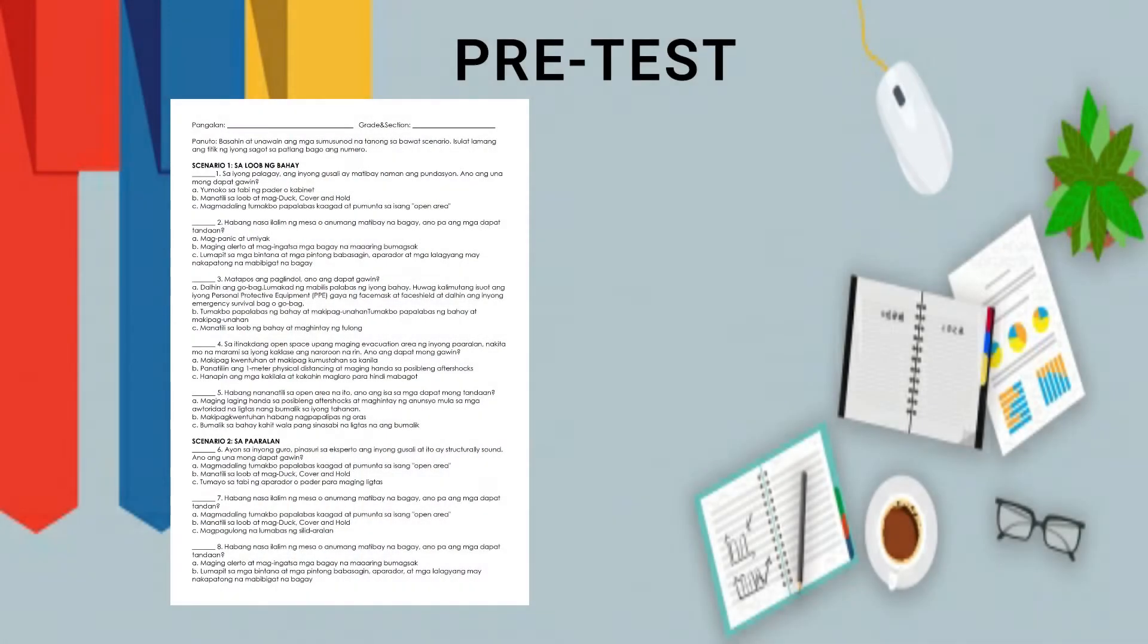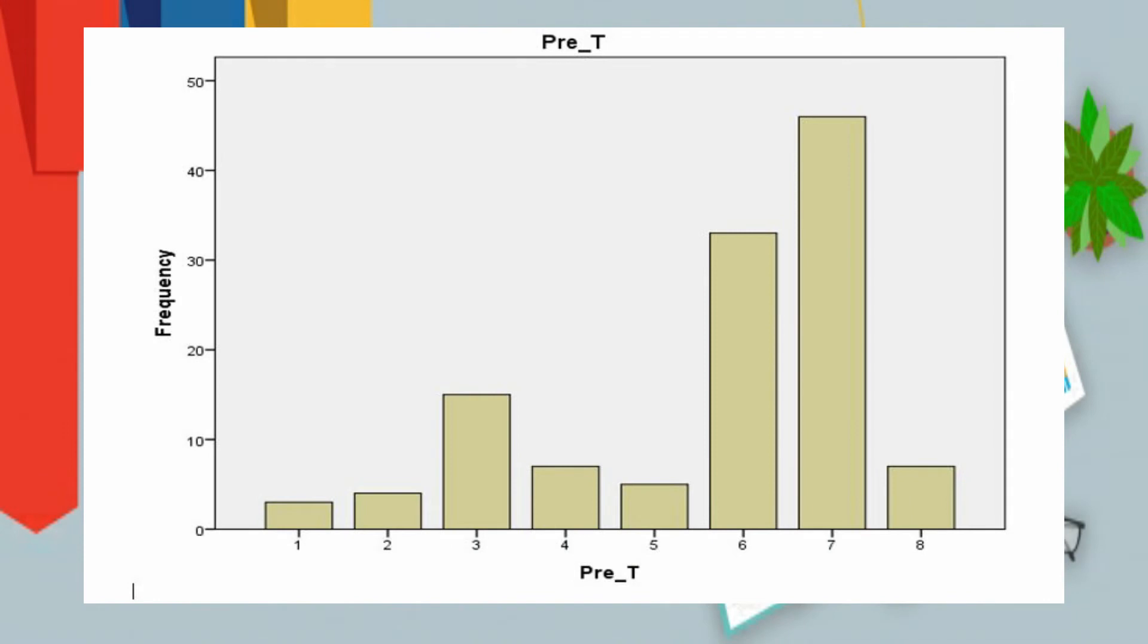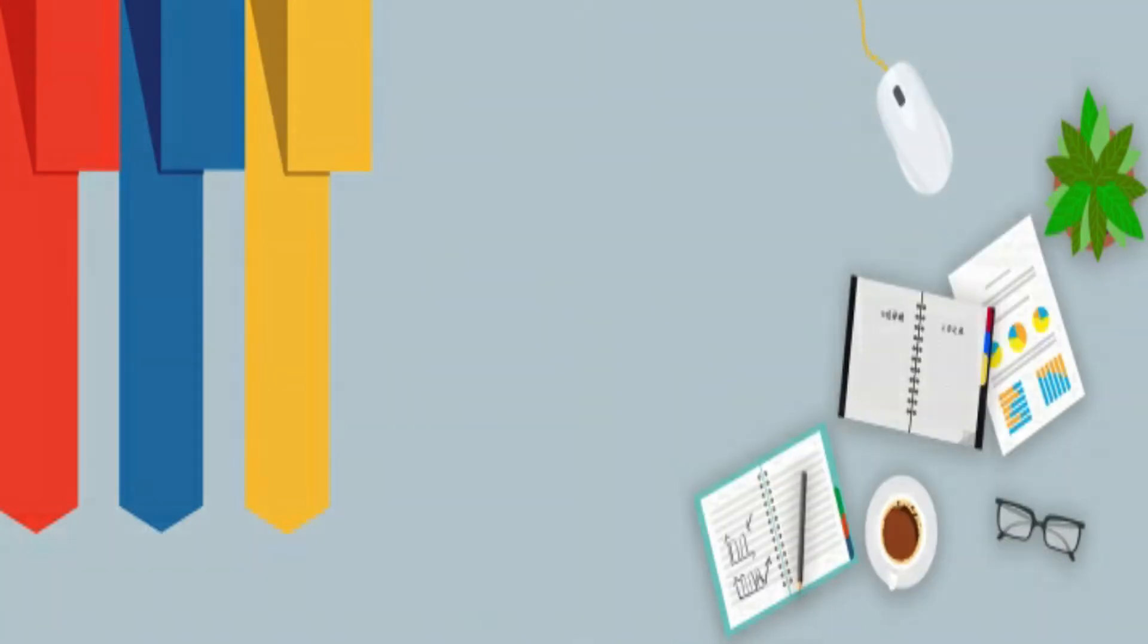A pretest was administered to Key Stage 2 learners of Ibea Elementary School to determine the learners who needed intervention on their disaster resilience. The data shows that there are 120 learners who will undergo the intervention stage.